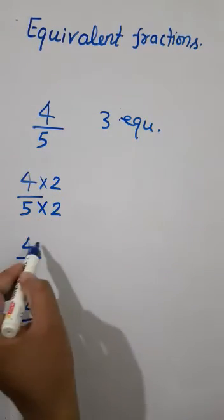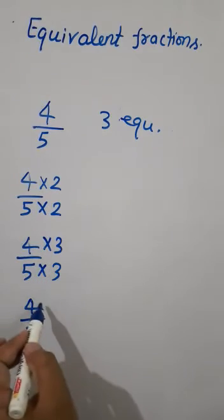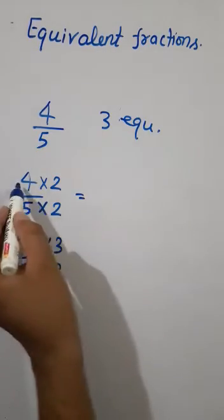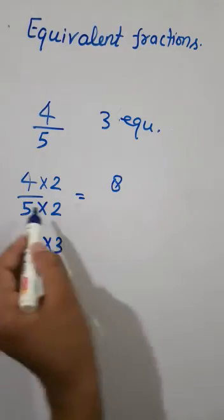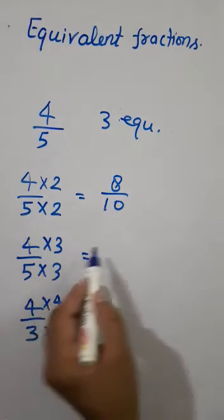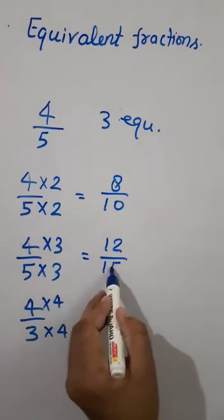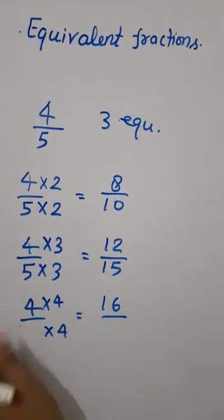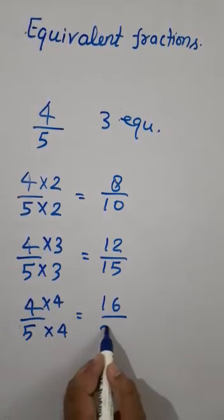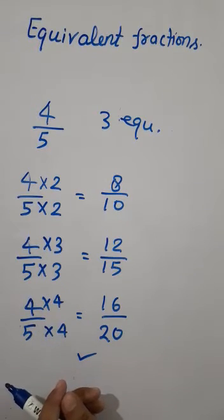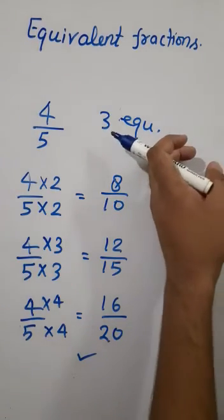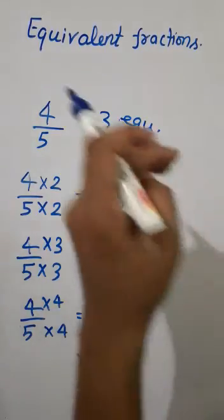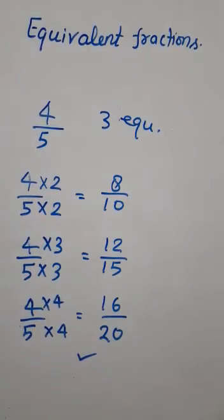So: multiplied by 2 gives 8/10; multiplied by 3 gives 12/15; multiplied by 4 gives 16/20. These are the three required equivalent fractions of 4/5. If the question had asked for five equivalent fractions, we would write 4/5 five times and continue the same process.